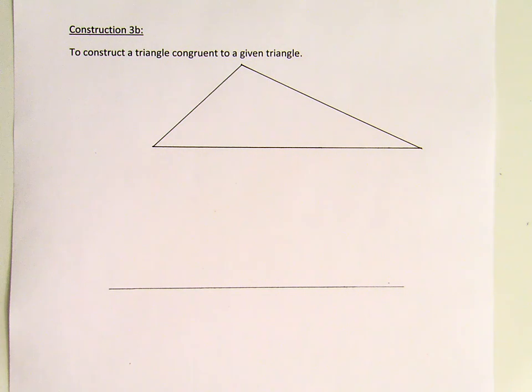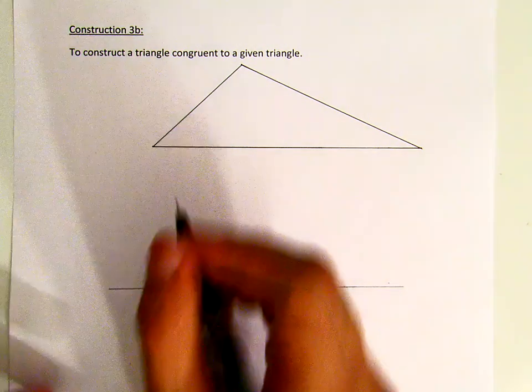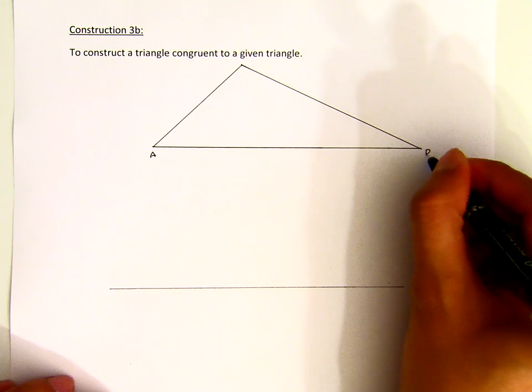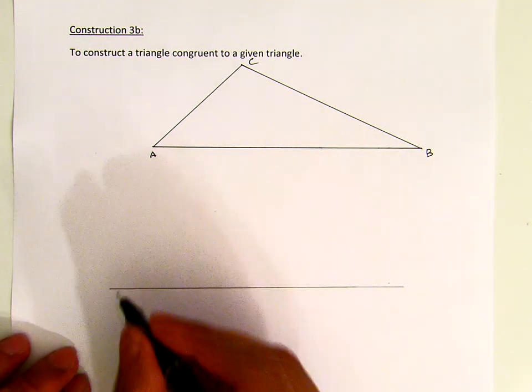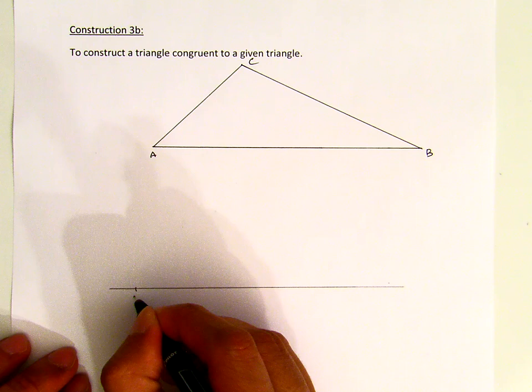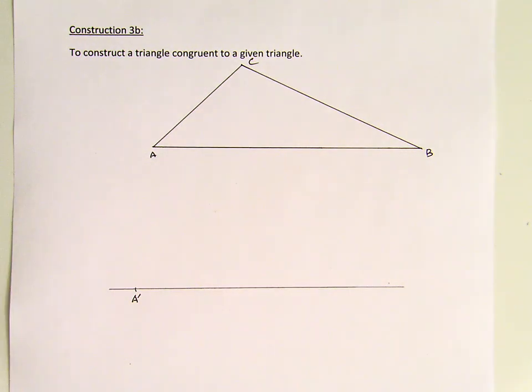Let's say this is point A, this is point B, and this is point C. Then on this line that I just drew, I will place a point somewhere and call that the copy of A.